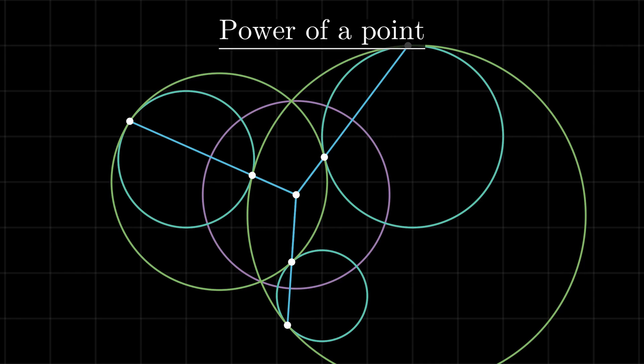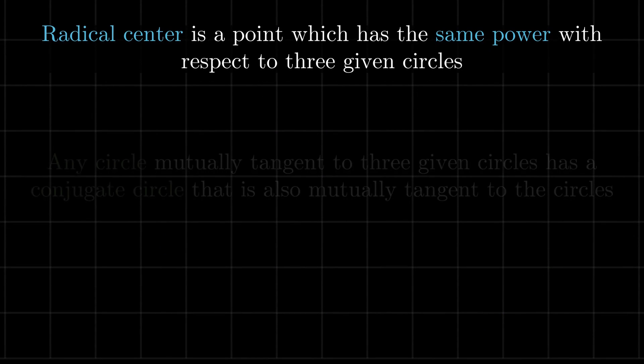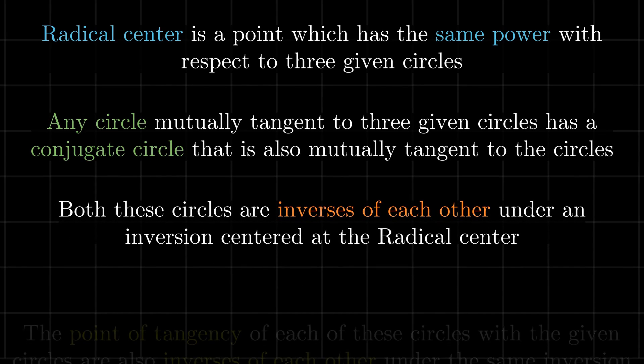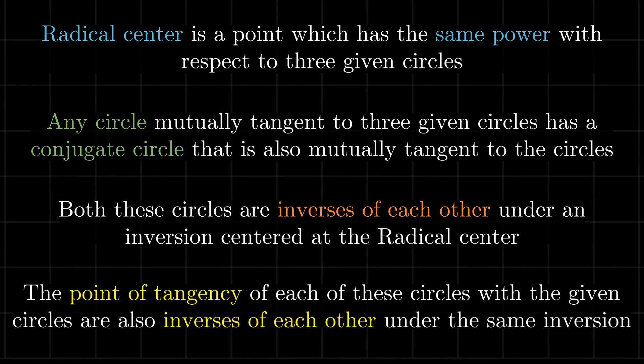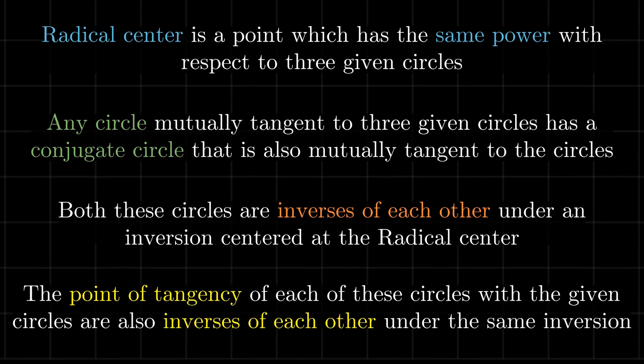This is our first step towards the solution. Even though we don't know the solution circles, we have some idea of where they touch the given circles. To complete this idea, Gigan developed the concept of poles and polar lines. Now, on to the idea of poles and polars.